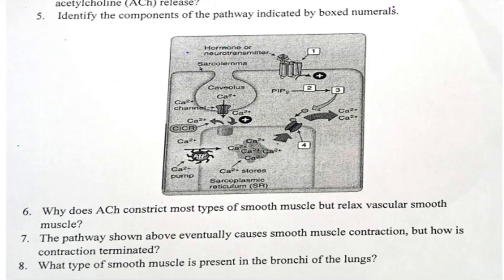Let's do part two of this question. It says: identify the components of the pathway indicated by the boxed numerals. Looking at this diagram, you can see PIP inside and a sarcoplasmic reticulum. When you see this mechanism with these secondary messengers causing calcium release from the sarcoplasmic reticulum, you know that this is a smooth muscle.